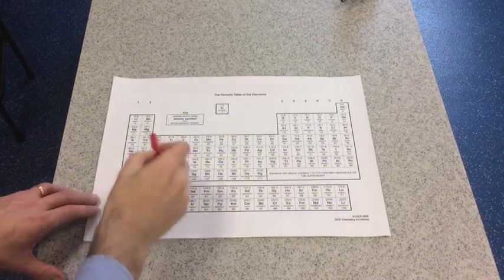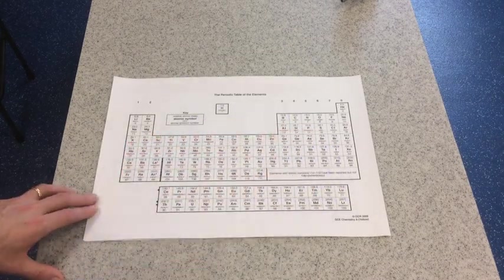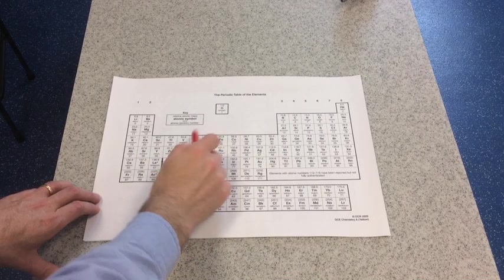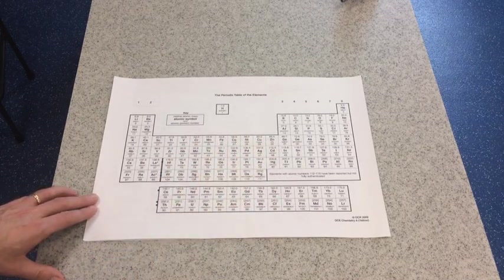So it's quite easy if you just look at the periodic table, you can work out the electronic configurations very quickly. Remember, though, that chromium and copper are slightly strange.